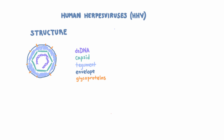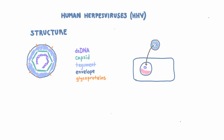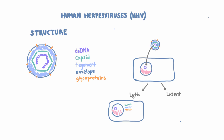Here's one critical fact to understand about herpes viruses. When a viral particle goes into a cell, it goes to the nucleus where it deposits its DNA, and it faces a choice: either to become lytic or to become latent. Lytic means the virus is going to make new proteins, replicate its DNA, and create new viral particles that can go infect new cells. We call that lytic because all the progeny virus produced ends up killing or lysing the cell.